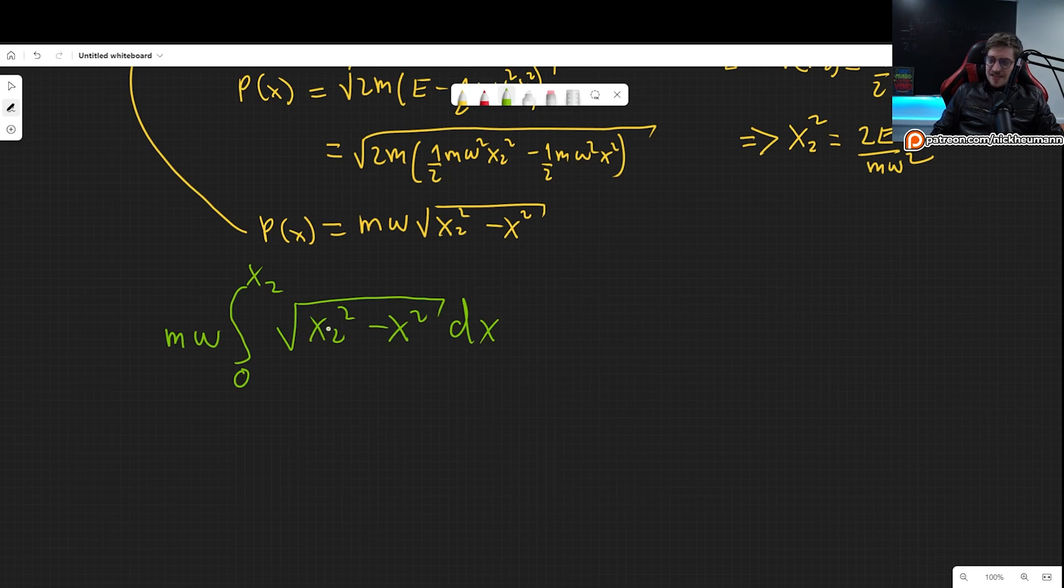So now we need to solve this integral. Now this integral might be familiar to you. It is something, a constant minus our variable squared and the square root. In this sort of problems, we like to use a substitution that is x equal our constant, which in this case is x2, times the sine of theta. Why do we like to do this? Because if we plug it in, I'm just going to do it.